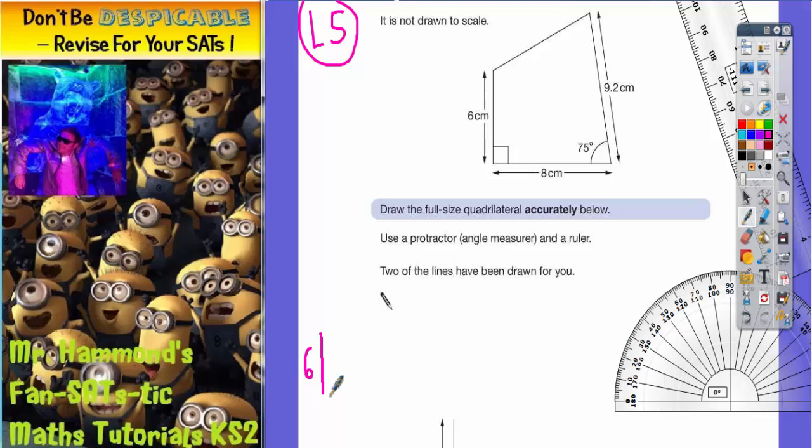I've got a line of 6cm going down, a line of 8cm across the bottom, and a slanted line of 9.2cm. For the last line, I have no information—I don't know the angles or how long it is. That line will have to be drawn last, so I'll get it for free if I've done the other three lines correctly.